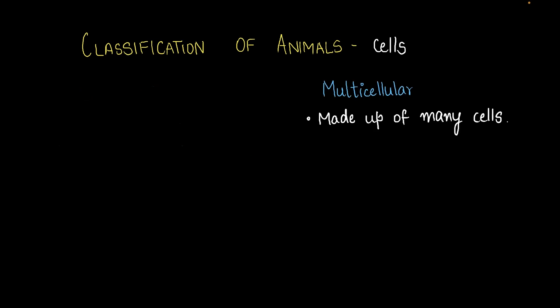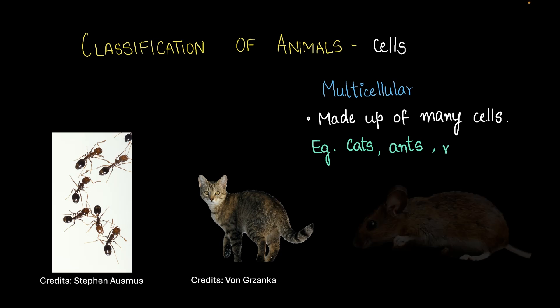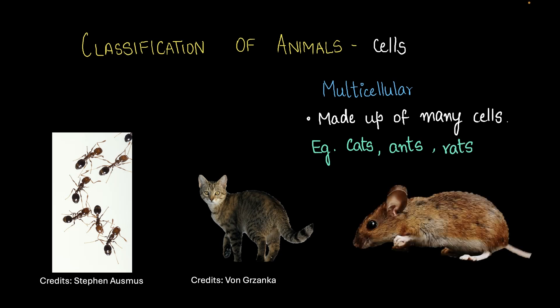On the other hand, we have multicellular organisms. These are made up of many cells and usually you don't need a microscope to see them. Examples of multicellular animals include cats, ants, rats, and there are lots of examples like these.